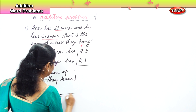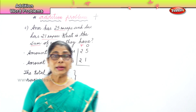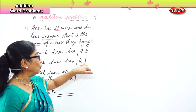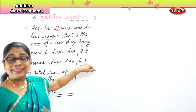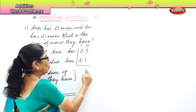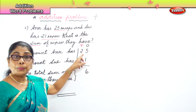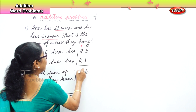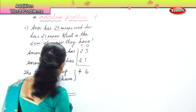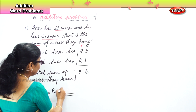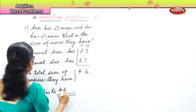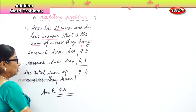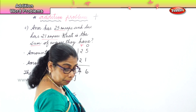When we add, we remember: add the ones together first. Five ones and one one — five plus one equals six. Then two tens and two tens — four tens. So you have 46, 46 rupees. The answer is rupees 46. The total sum of rupees they have is rupees 46. And that is one problem done.